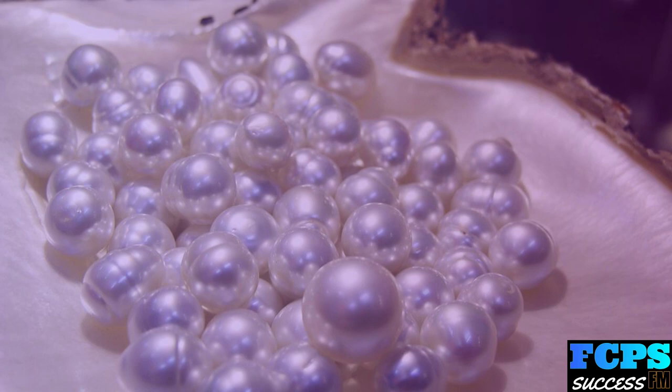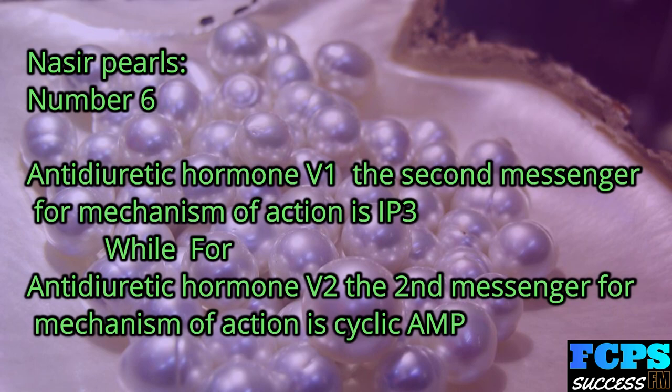Nasir Pearl number 6: For antidiuretic hormone V1, the second messenger for mechanism of action is IP3. For antidiuretic hormone V2, the second messenger for mechanism of action is cyclic AMP.